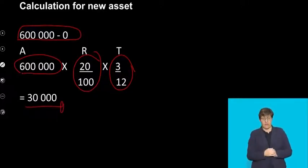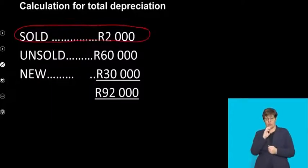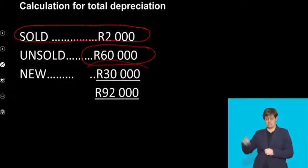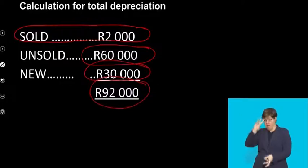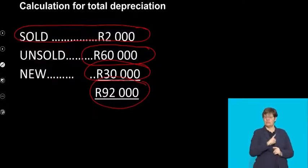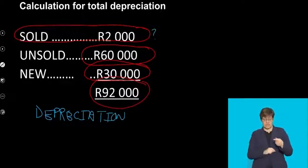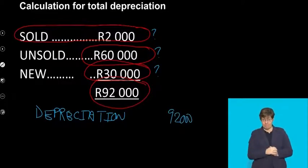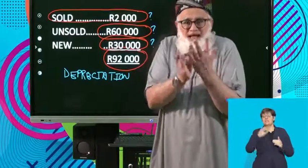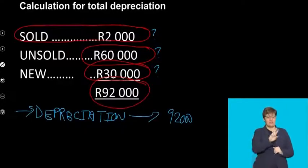So what components do I have for my depreciation? One, the sold: R2,000. Two, the unsold: R60,000. Three, the new: R30,000. This is your total depreciation figure that will appear in your statement of comprehensive income under the expense depreciation. R2,000 plus R60,000 plus R30,000 gives a total of R92,000. That is the final depreciation figure you need for your statement of comprehensive income.